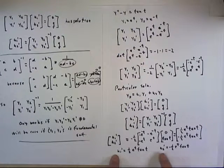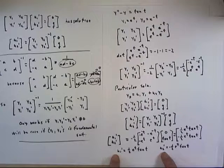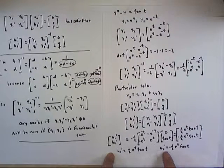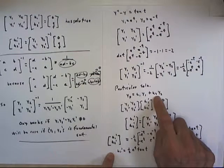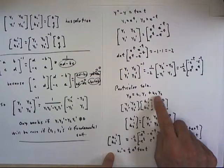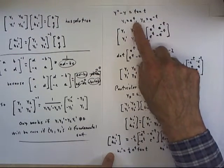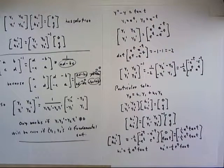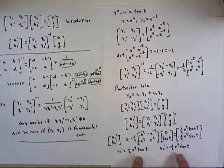If we can integrate these two functions to find u1 and u2, because of course what we have here is u1 prime and u2 prime, we will then have a function u1 and a function u2 that we can substitute here along with y1 and y2, which are just e to the t and e to the negative t to get our particular solution. So the method simply comes down now to integration.